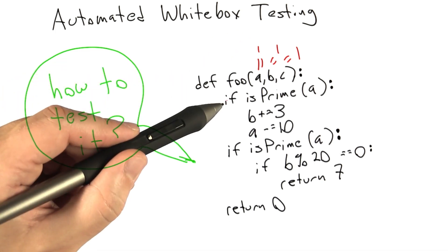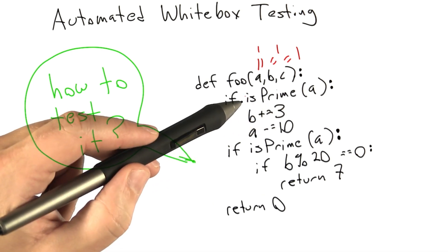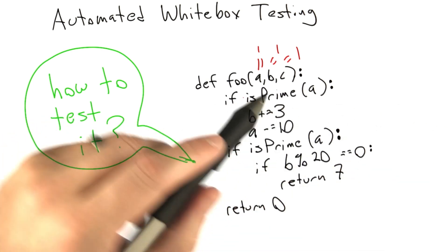The most obvious choice point to start with is the first if. So the question the tool is going to ask is, how can it generate an input that's prime? To do that, it's going to have to look at the code that tests for primality.